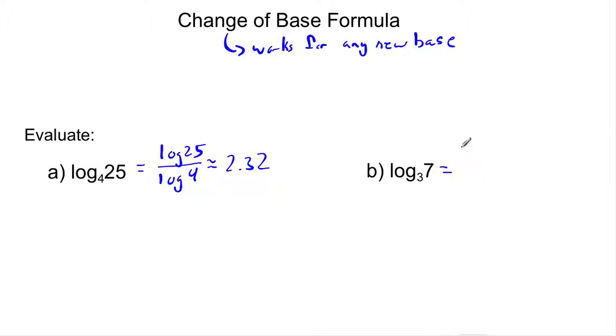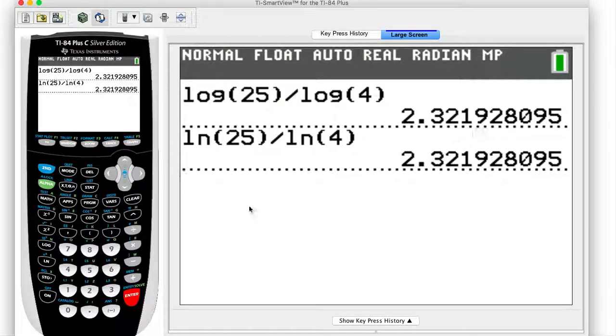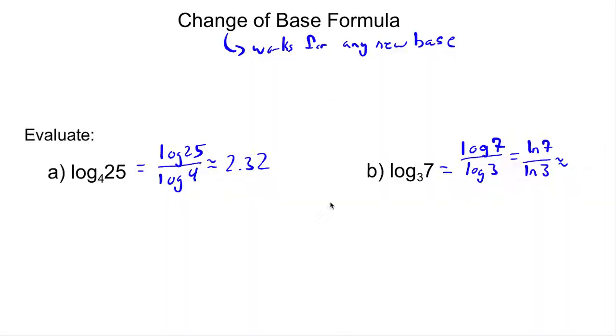Log base 3 of 7. I can do log base 10 of 7 over log base 10 of 3, which is going to be the same as natural log of 7 over the natural log of 3. Either way, if I plug this in, I get log of 7 divided by log of 3, and I'm going to get 1.77.